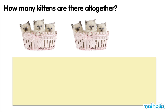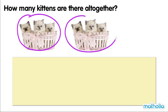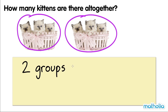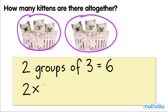How many kittens are there all together? There are two groups of kittens. In each group, there are three kittens. Two groups of three kittens. Two groups of three equals six, or two times three equals six. There are six kittens all together.